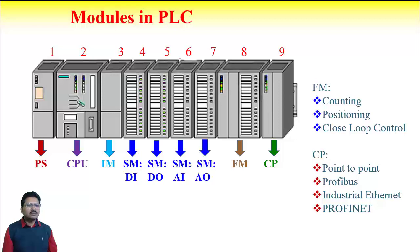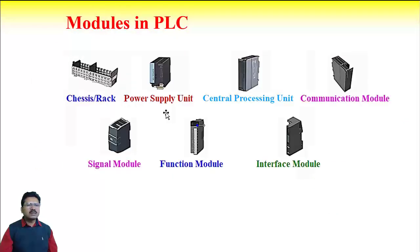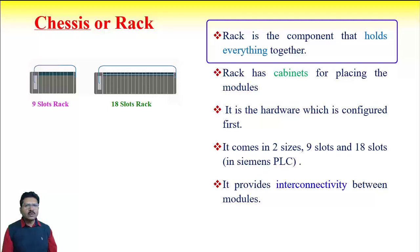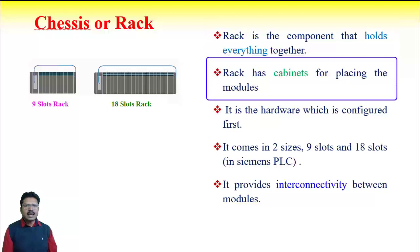Now I will describe a few points on these different modules. These are examples: power supply module, central processing unit (CPU), communication module, signal module, function modules, and interface module. All these modules are placed on the chassis or rack. The rack is the component that holds everything together — all the modules along with the necessary electronic circuitry. The rack has cabinets for placing these modules.